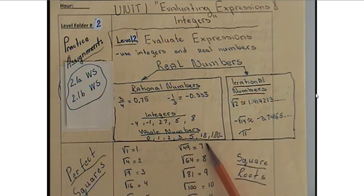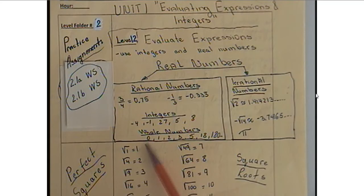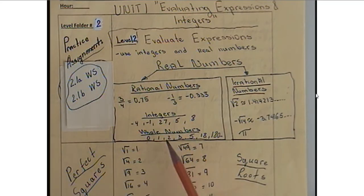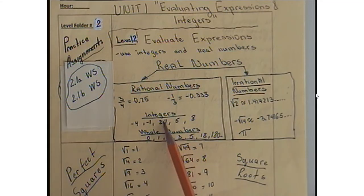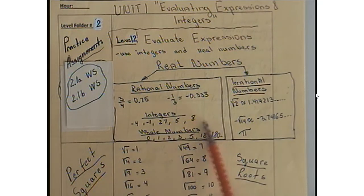Whole numbers are all the numbers that you learn for the first time in your life — like 1, 2, 3, 4, 5, 6 and so on, all the positive numbers. To remember, think of the letter O: whole numbers include zero as well. So zero and all positive numbers are called whole numbers.